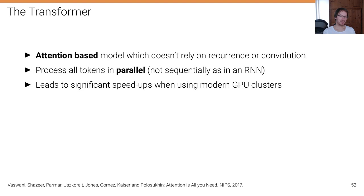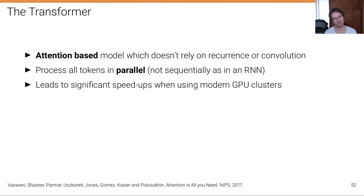That paper was a big step and led industry to change the algorithms used in practice — neural machine translation started to have a real impact. Then in 2017, there was another big step: the transformer paper, which completely changed the architecture of neural machine translation models into a purely attention-based architecture. The transformer is an attention-based model that doesn't rely on recurrency or convolutions.